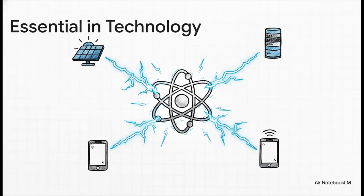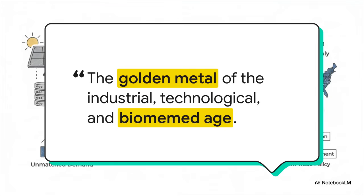So where is all this demand coming from? Well, fun fact, silver is the single best conductor of electricity known to man. That makes it non-negotiable for high-tech stuff, from the solar panels popping up everywhere, to the massive data centers that are powering the AI race, and yep, even the phone that's probably in your hand right now. I love this quote. It just hits the nail on the head. While we think of gold as the metal of money, silver has really become the golden metal of our modern age, the industrial, the technological, and even the biomedical age. It's literally the backbone of progress.